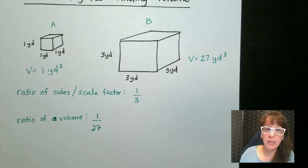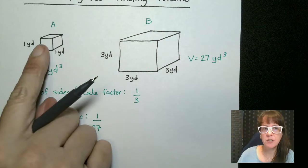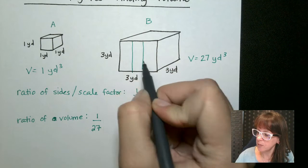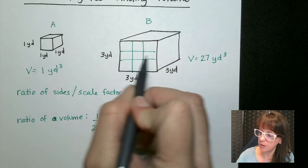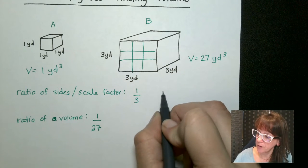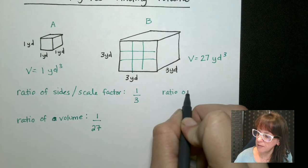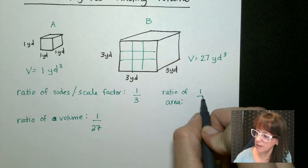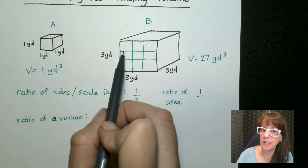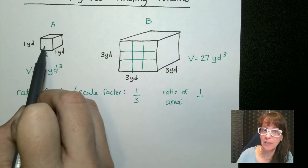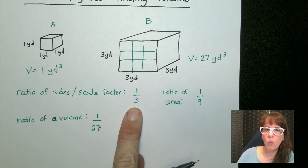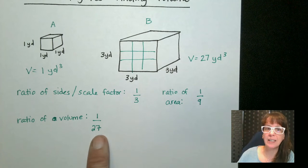Now the other thing we can talk about is the ratio of the area. Let's just do the front face of this. So on this one it's a 3 by 3 but this one over here it's just a 1. So the ratio of the area is 1 to 9. The area of this thing is 1. So we have 1 to 3, 1 to 9, 1 to 27.